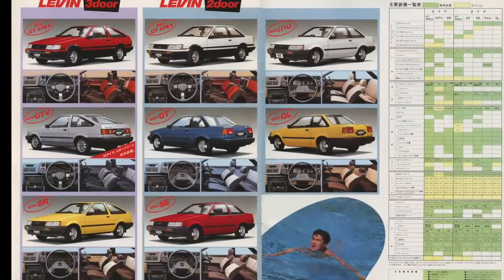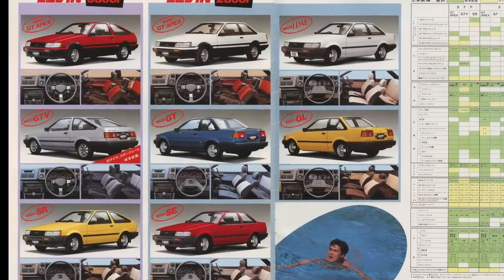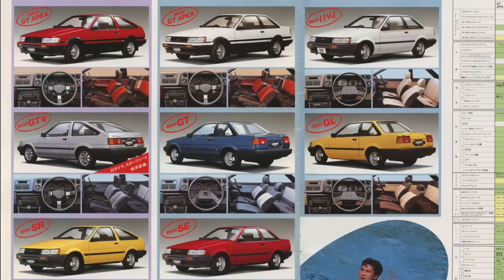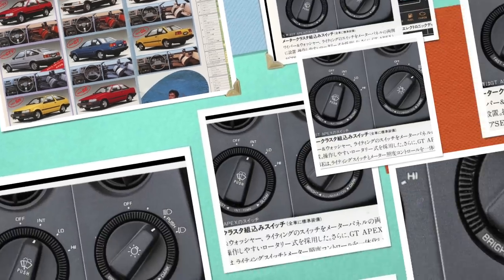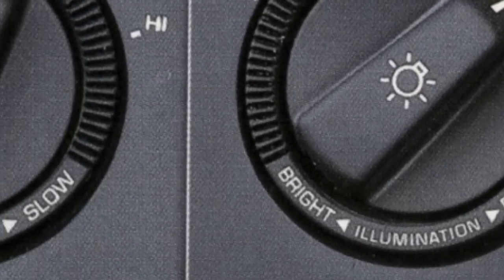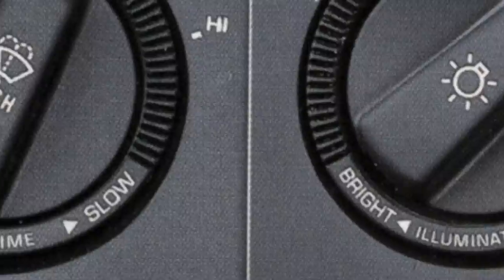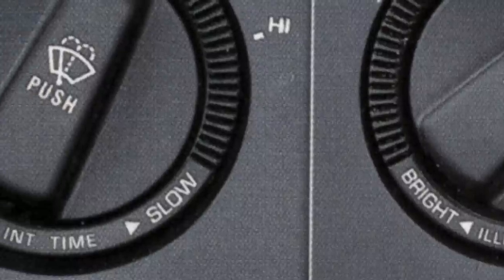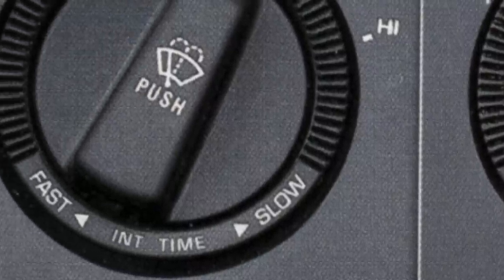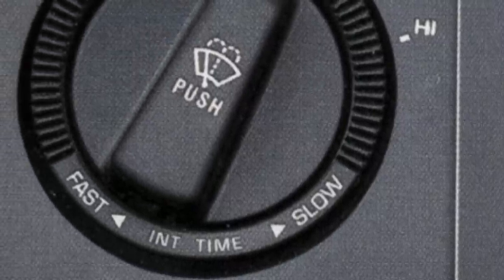However, there is a difference between the various trim levels. There were illumination and wiper interval dials available on some of the various trim levels of the Trueno and Levin.